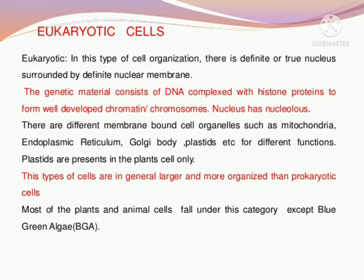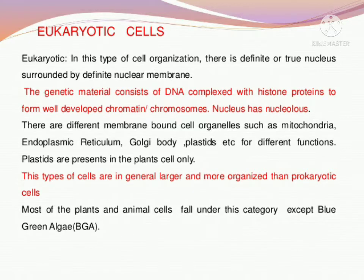Next, eukaryotic cells. These are cells that possess a true nucleus. Cells in which a true nucleus is present — we call them eukaryotic cells. Meaning the cells that possess a well-defined nuclear membrane around their genetic material. Since the nuclear membrane is present, a complex type of organization exists in eukaryotic cells.